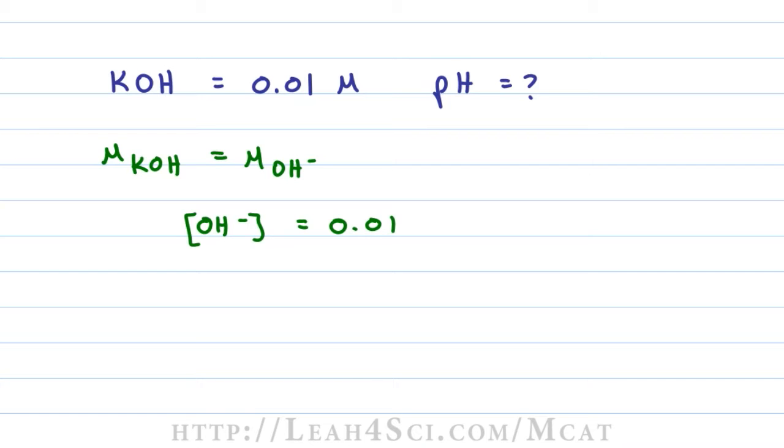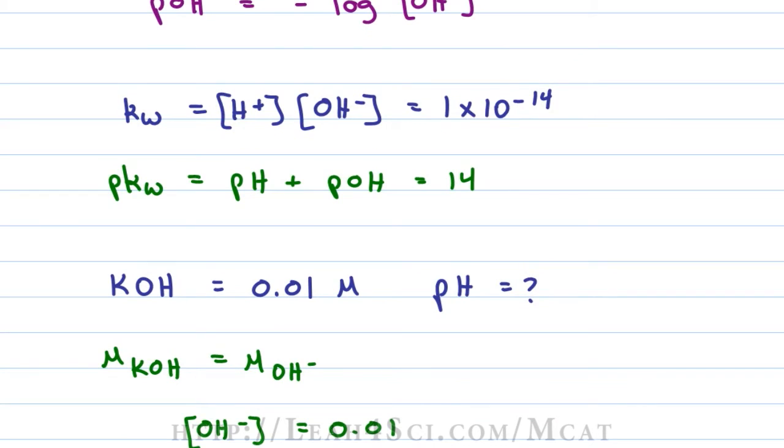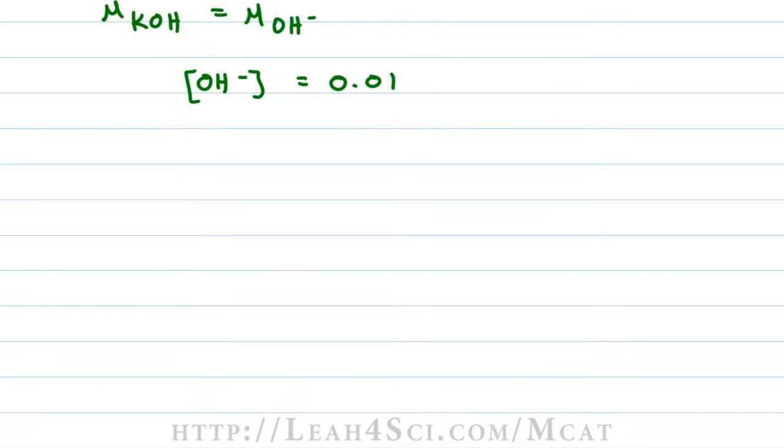The first thing we can do is use the Kw = H+ × OH- but I don't want to deal with exponents and scientific notation if I don't have to. So I prefer to go the second route, find the pOH from the OH- concentration and then use the pOH to find the pH, much faster and honestly way less stressful. The pOH is equal to negative log the OH- concentration of 0.01 which will first turn into scientific notation of 1×10^-2.